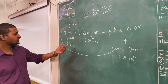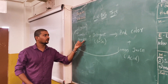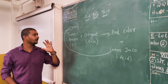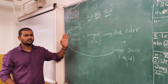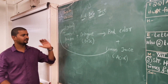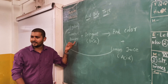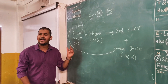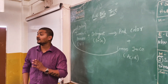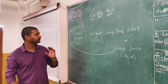First of all you have to take a turmeric powder. What do we have to take? Turmeric powder! What is the color of turmeric? Turmeric powder is a natural indicator. What do we call it? Natural indicator!